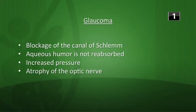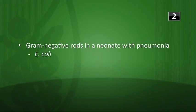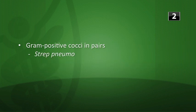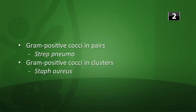Next: what infectious agent causes pneumonia based on the following lab tests? Gram-negative rods in a neonate with pneumonia — think E. coli. Gram-positive cocci in a neonate with pneumonia — think Group B Strep. Gram-positive cocci in pairs is classic for Strep pneumo, and gram-positive cocci in clusters is classic for Staph aureus.